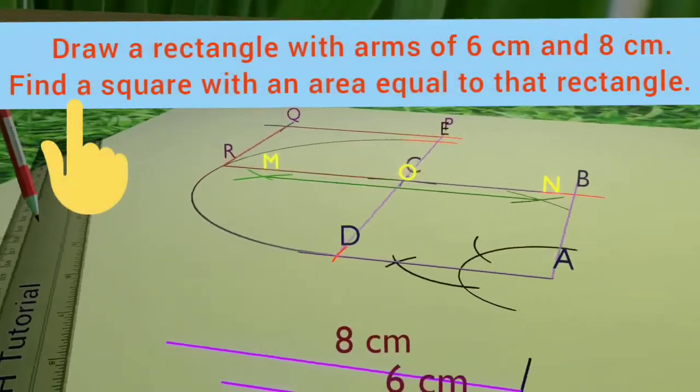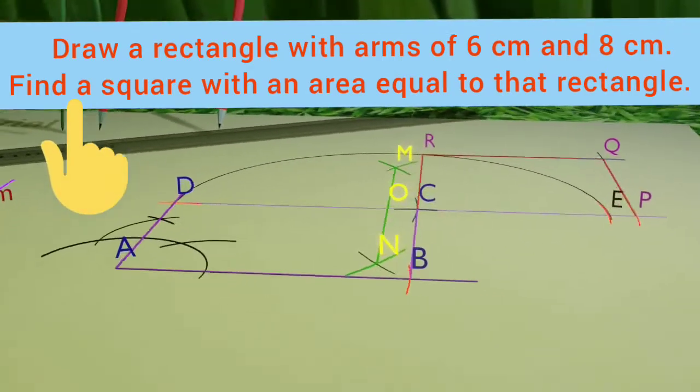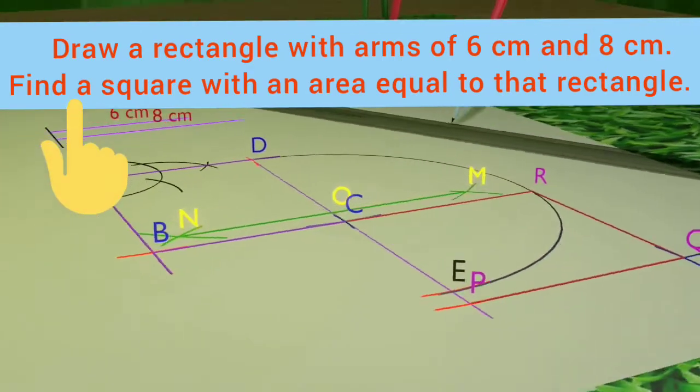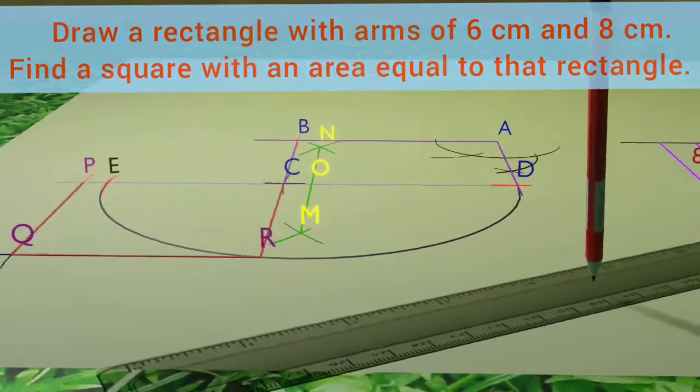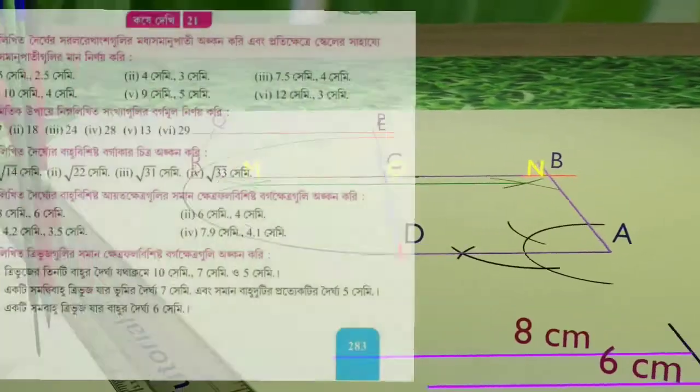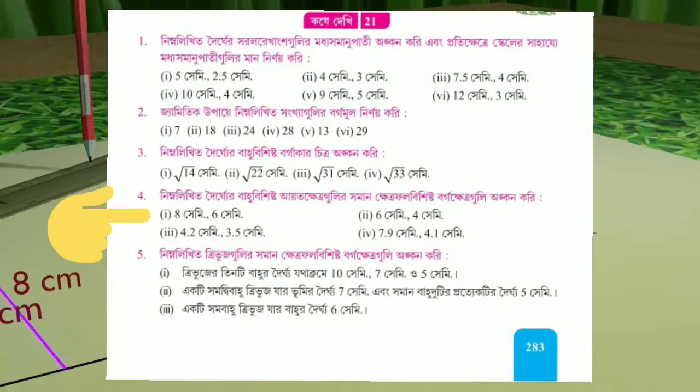Draw a rectangle with arms of 6 cm and 8 cm. Find a square with an area equal to that rectangle. You can find this question on page number 283 of Gonad Prakash.